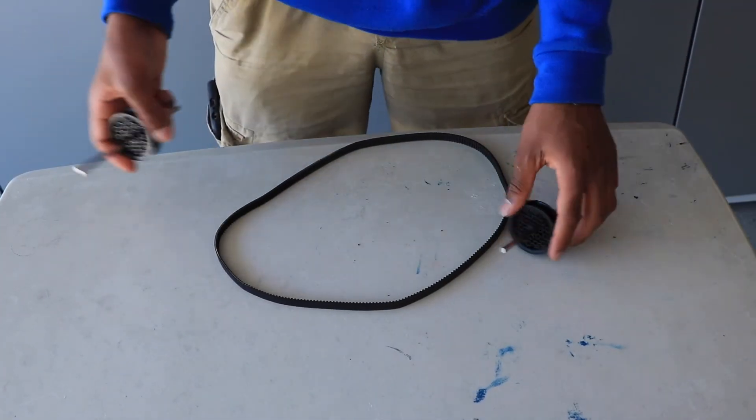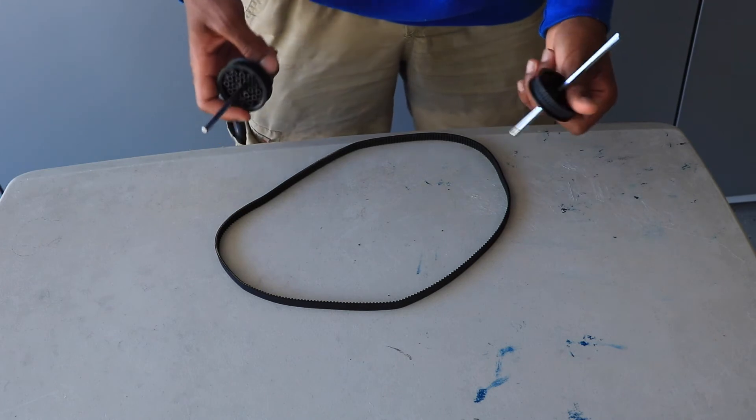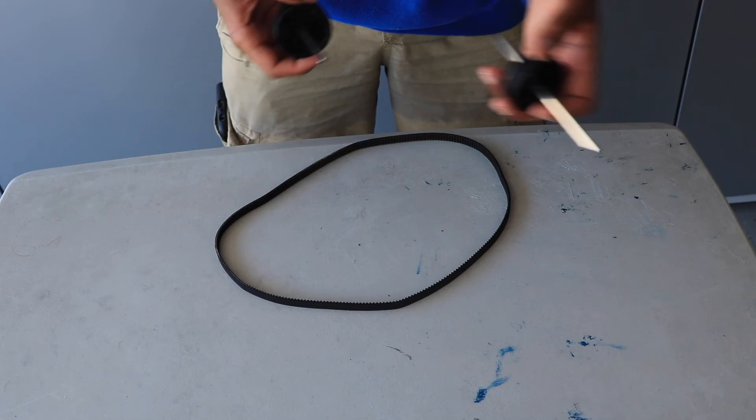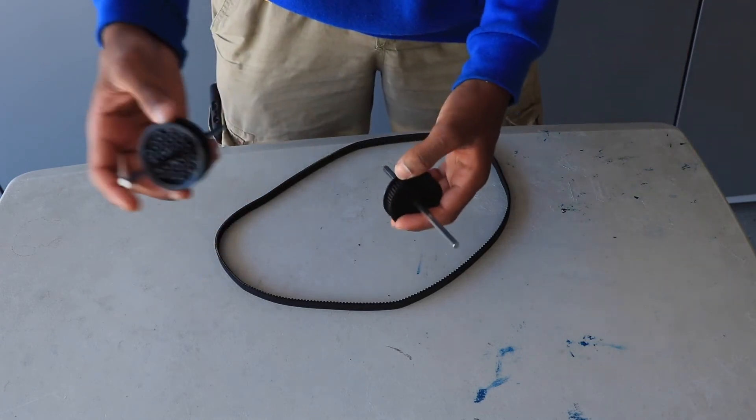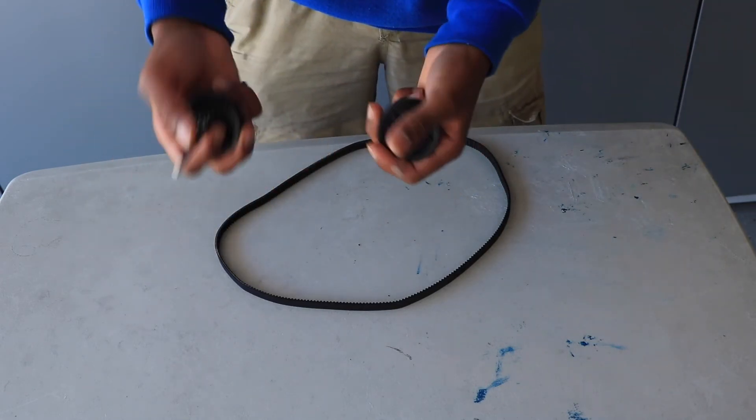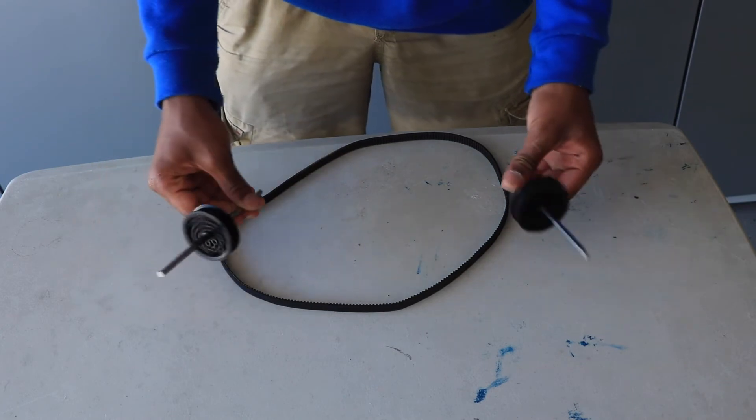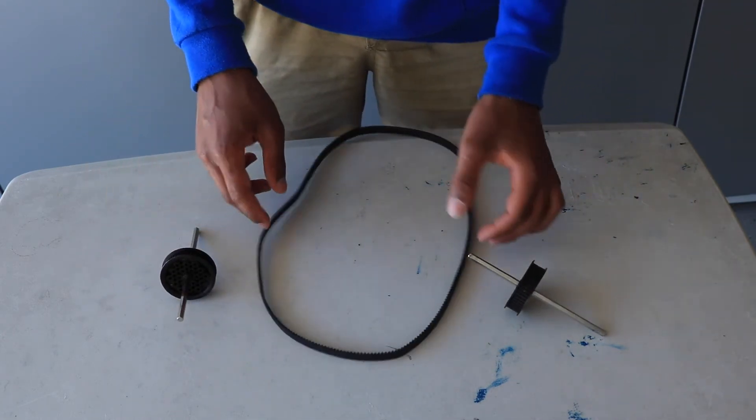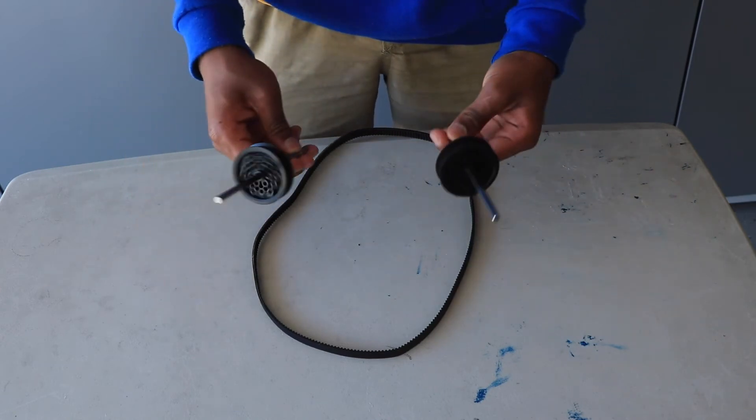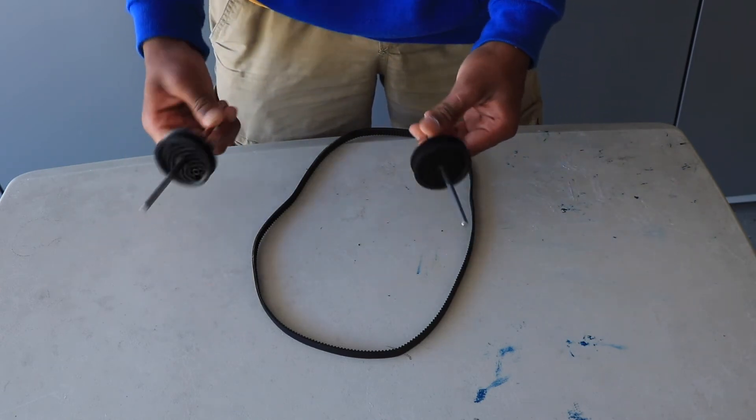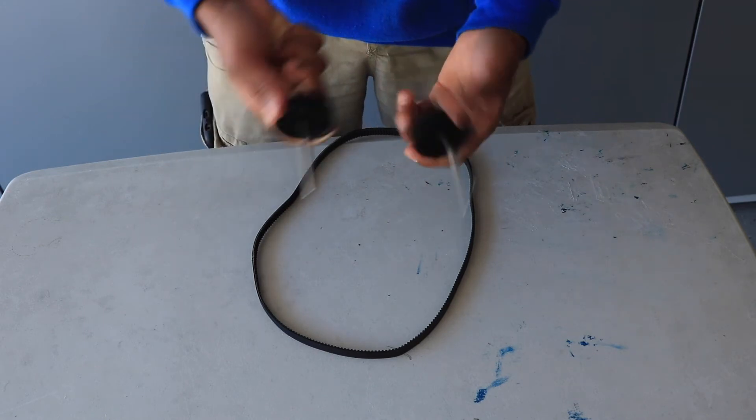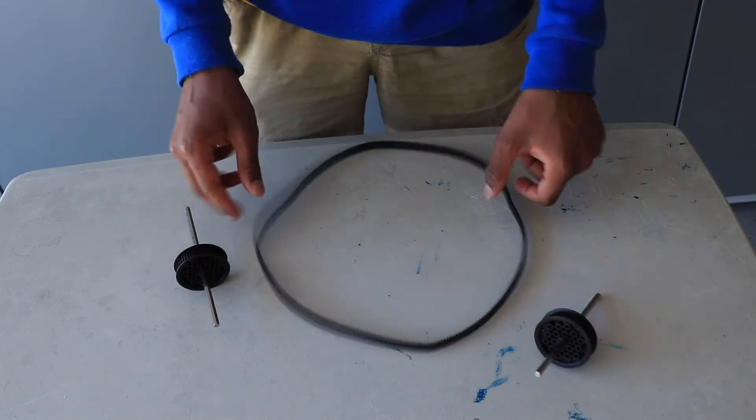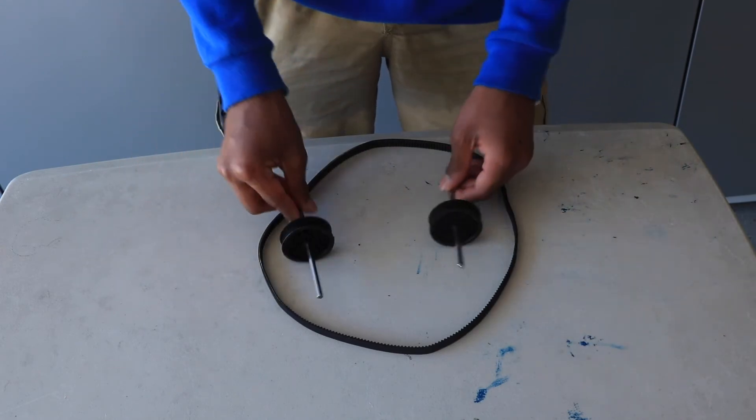Here we have our third and final example of motion transmission on an FTC robot. This is one of the more common ways of transferring motion. Here we have two pulleys on two shafts, and these are the two shafts that are going to be connected.